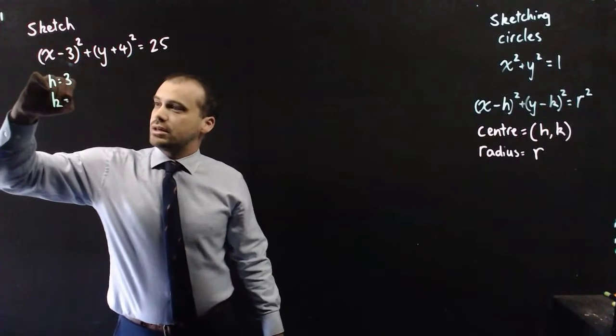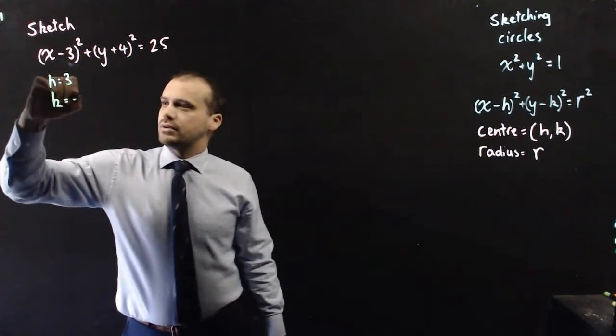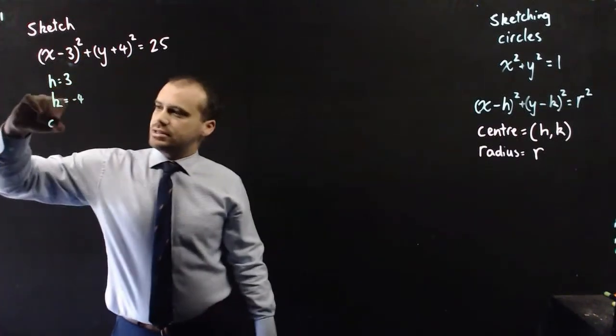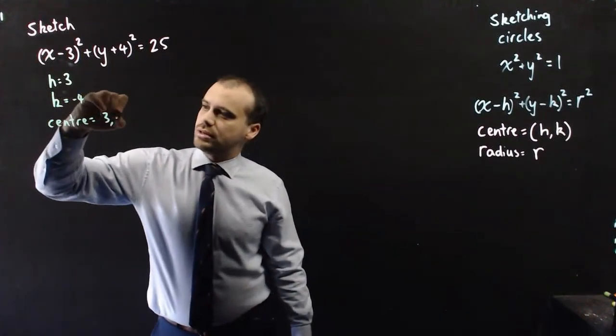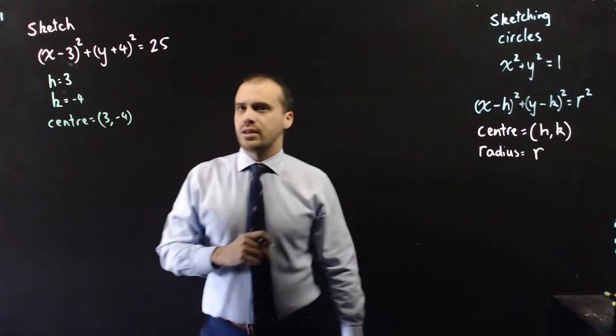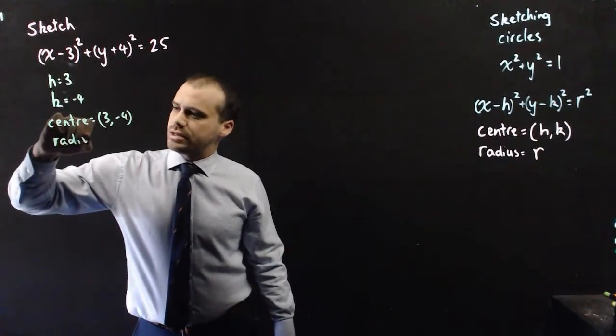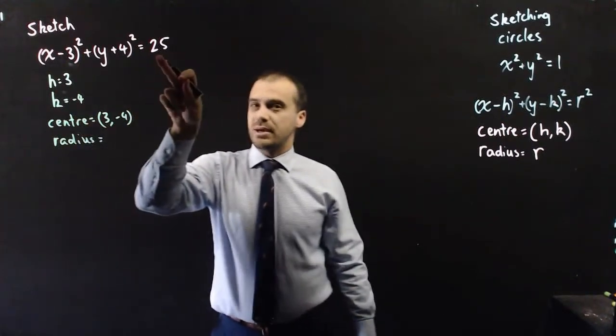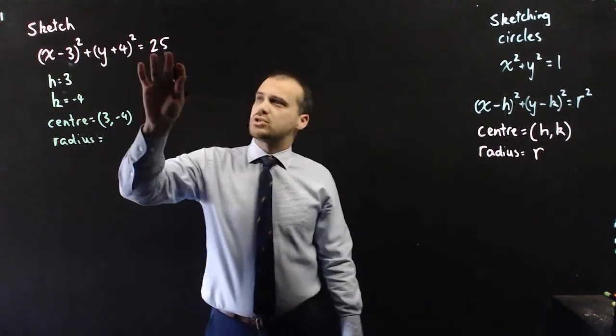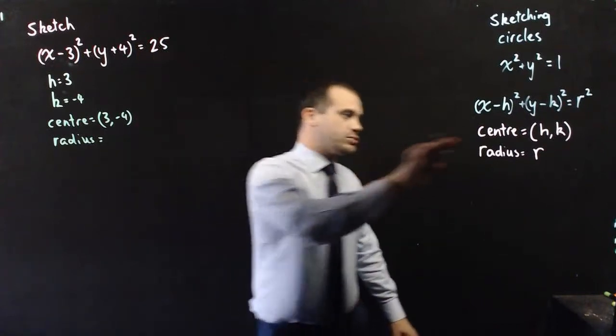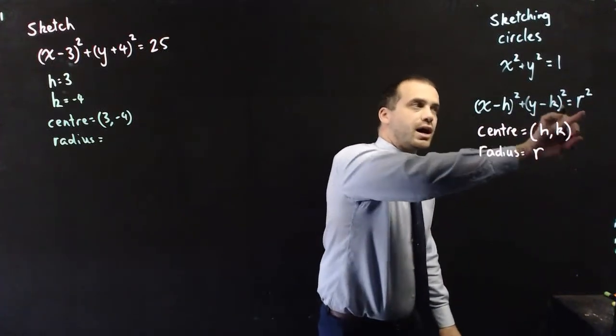And the k value here is actually negative, which means that our center is at the point 3, negative 4. Now, what about our radius? Our radius is given by looking at this number here, but it's not going to be 25. It's got to be the square root of that number, because remember, our initial equation says r squared.